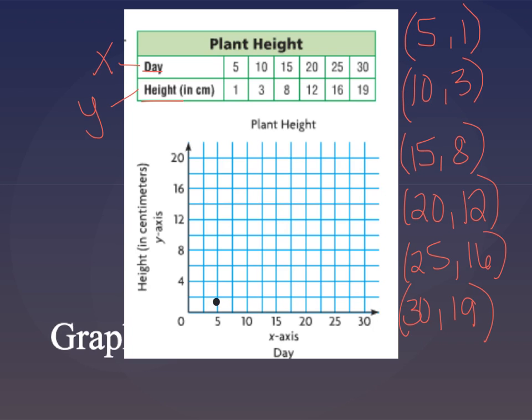Okay, next I have 10, 3, so I'm going to go to the 10 and up to the 3, it's going to be about right here. Alright, next I have 15, 8. Go over to the 15, up to the 8, that's perfectly right there. I like my little dots here, they're coming out pretty nice.